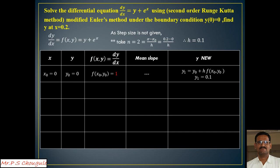By Euler's formula we get y1=0.1. The next value x1 = x0 + h = 0.1, and at that point y1=0.1. Now we need to find f(x1, y1) by substituting x1 and y1 into the equation, which gives us a slope of 1.2052. We now have two slopes: 1 and 1.2052, and we need to find the mean slope.